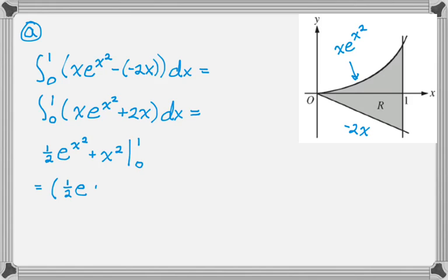So when you plug in 1, you get 1 half e plus 1 minus, don't forget there's an e involved, so plugging in 0 doesn't zero everything out. So it's minus 1 half e to the 0, which is just 1 half. And then if you want to, you can simplify that to get 1 half e plus 1 half. And that is the area of that region.